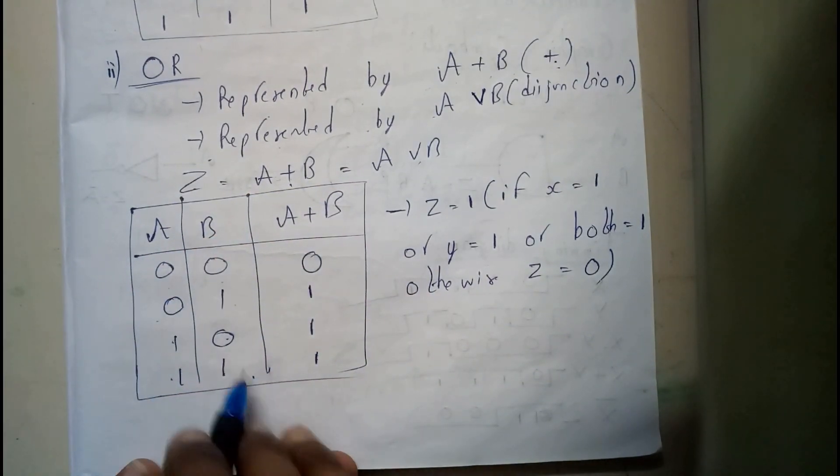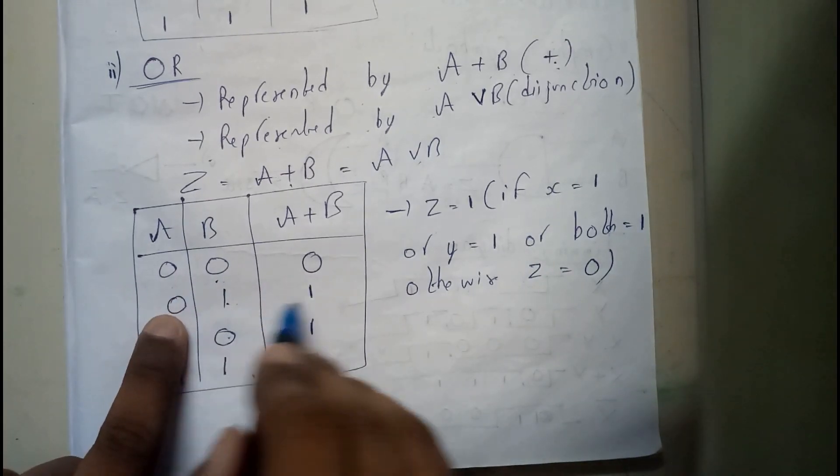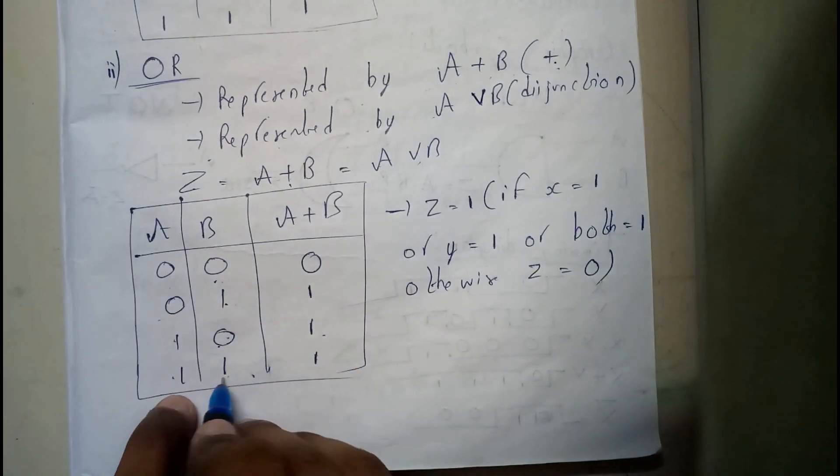0, 0; 0, 1; 1, 0; 1, 1. So addition of 0, 0 is 0. 0, 1 is 1. 1, 0 is 1. 1, 1 is 1.